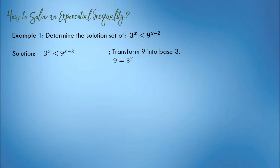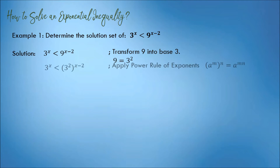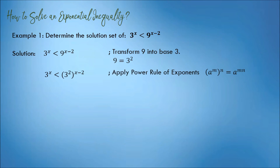Transform 9 into base 3. 9 is equivalent to 3 squared. The inequality becomes 3 raised to x is less than 3 squared, raised to x minus 2.